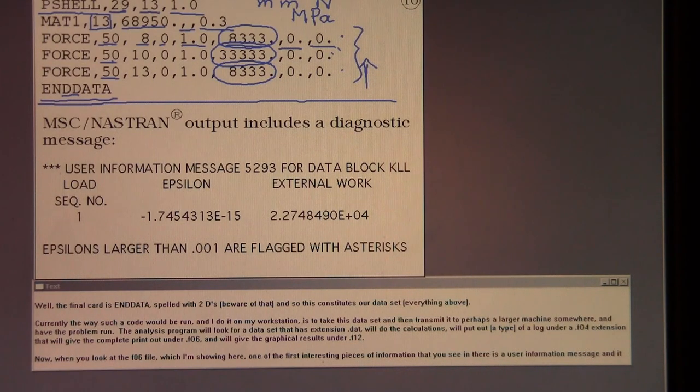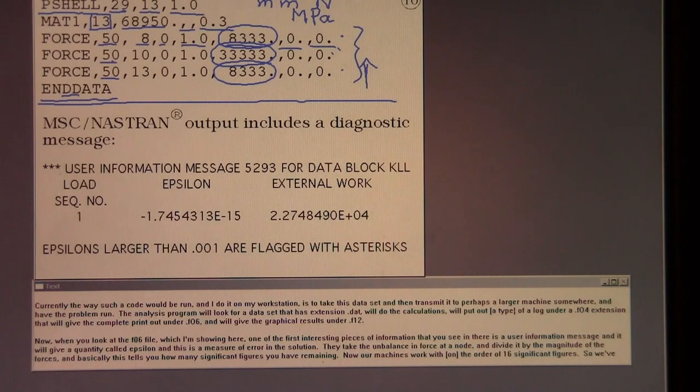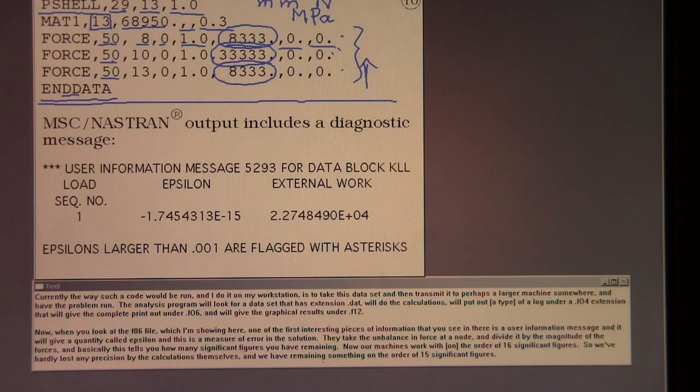Currently, the way such a code would be run, and I do it on my workstation, is to take this data set and then transmit it to perhaps a larger machine somewhere and have the problem run. The analysis program will look for a data set that has extension dot DAT. We'll do the calculations. We'll put out kind of a log under a dot F04 extension. It will give the complete printout under dot F06. And we'll give the graphical results under dot F12.